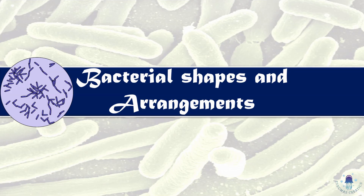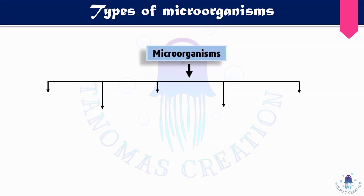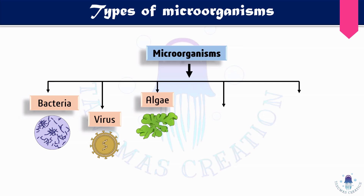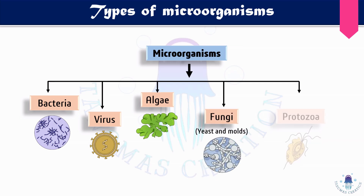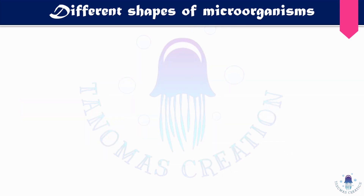Hello everyone, today we are going to learn about bacterial shapes and their arrangements. Before getting started, we need to know how many types of microorganisms are present on this planet. Microorganisms are commonly divided into five groups: bacteria, virus, algae, fungi, and protozoa — these are the five common types of microorganisms present on the planet.